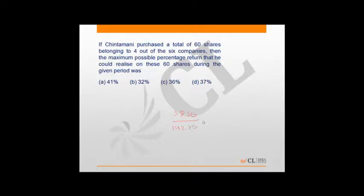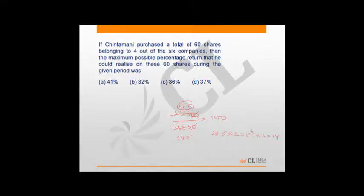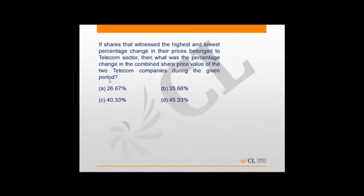The percentage return is 5850/14250 × 100. Simplifying by cancelling zeros and dividing by 5 gives 117/285. Since 10% of 285 is 28.5, and 40% is 114, we know 117 is just above 114, meaning the answer is just above 40%. Only one option is above 40%, so the answer is 41%, determined by elimination without computing the exact value.